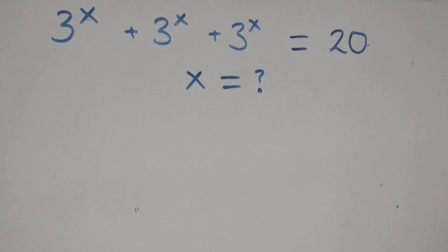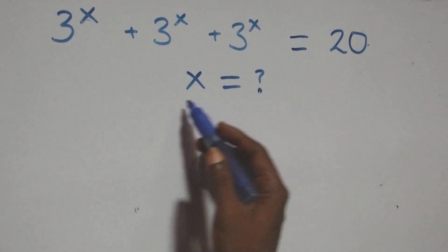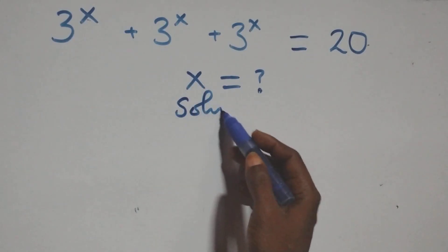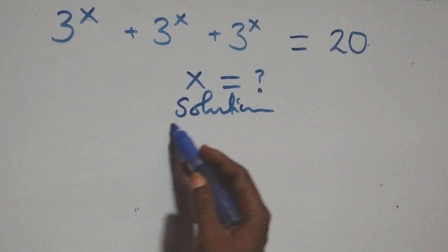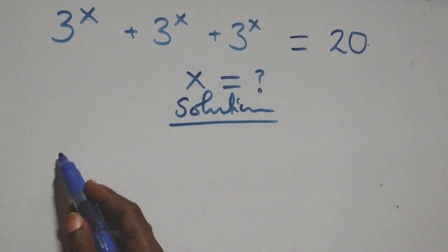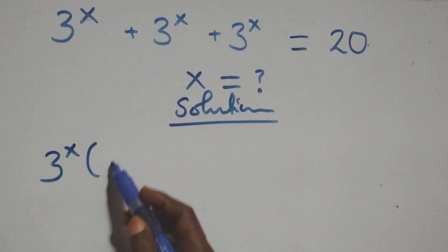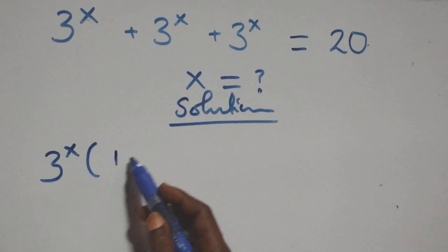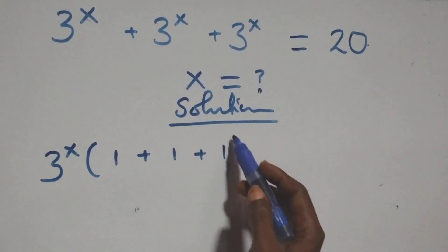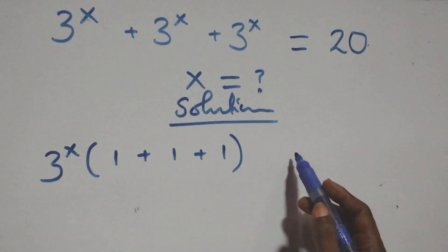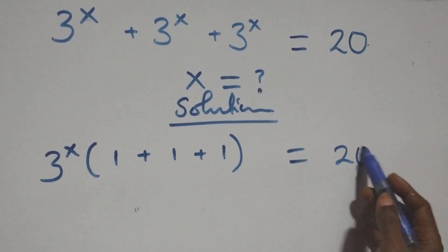Hello, you are welcome. We solve this exponential equation. We factor 3 raised to power x here, and we have 3 raised to power x in brackets, with one plus one plus one left, plus bracket equals to 20 on this side.